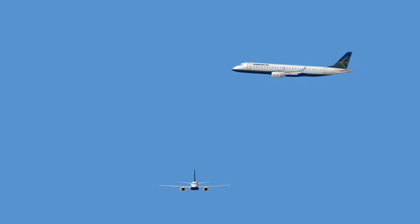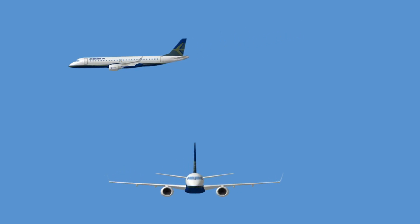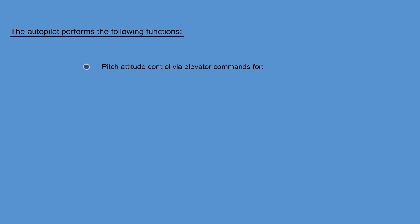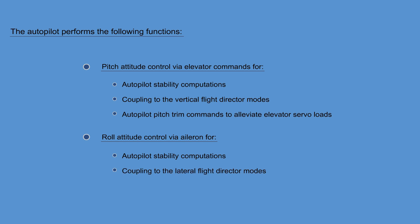The autopilot provides automatic flight path and roll control of the aircraft. The autopilot performs the following functions: pitch attitude control via elevator commands for autopilot stability computations, coupling to the vertical flight director modes, autopilot pitch trim commands to alleviate elevator servo loads, roll attitude control via aileron for autopilot stability computations, and coupling to the lateral flight director modes.